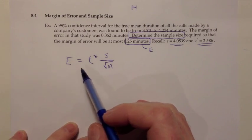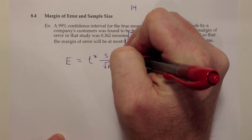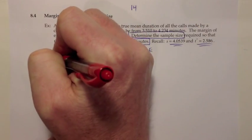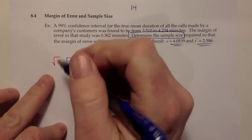When we have an equation that contains fractions, usually the first thing we want to do is multiply by the common denominator to clear those fractions off. If I multiply both sides by root N, that would cancel over here. Those would have canceled on this side. We'd have root N times E equals T-star times S.